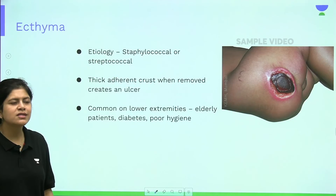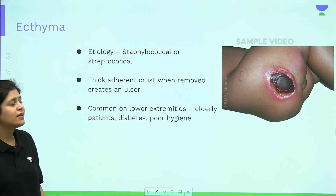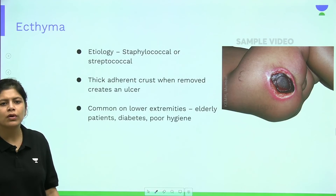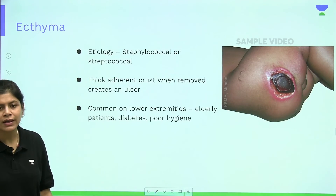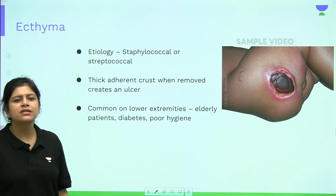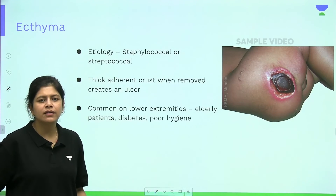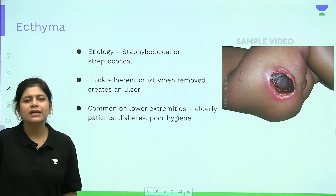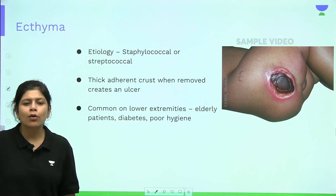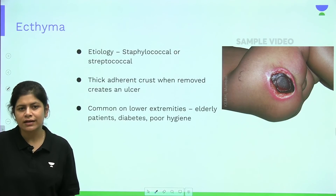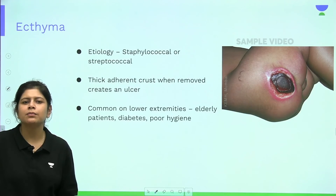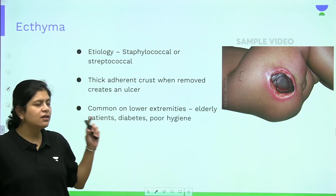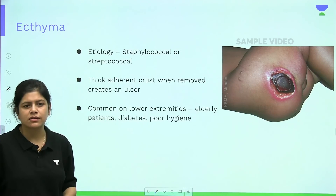Ecthyma is caused by staphylococci or streptococci, more commonly streptococci. It is characterized by a thick adherent crust; when removed, it reveals an underlying ulcer. It commonly occurs on the extremities, particularly in elderly patients, diabetics, and those with poor hygiene.